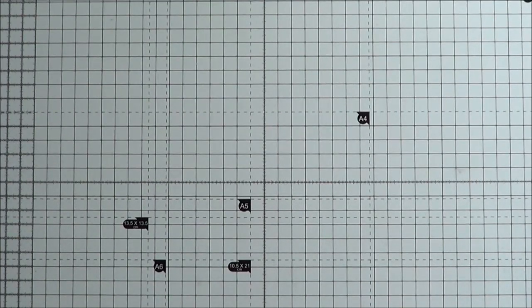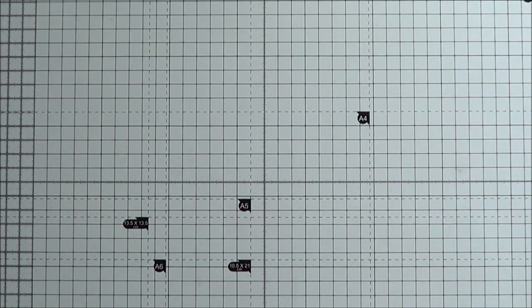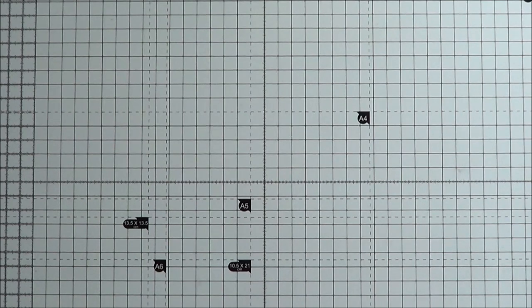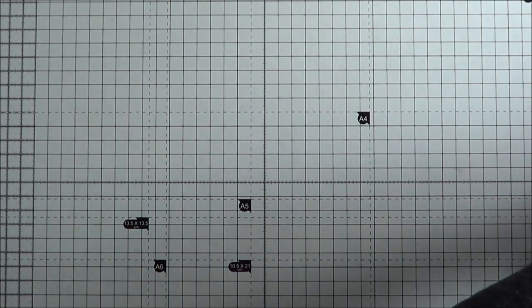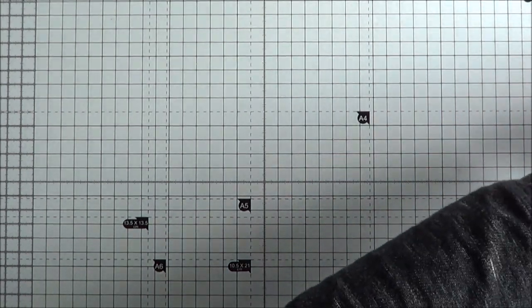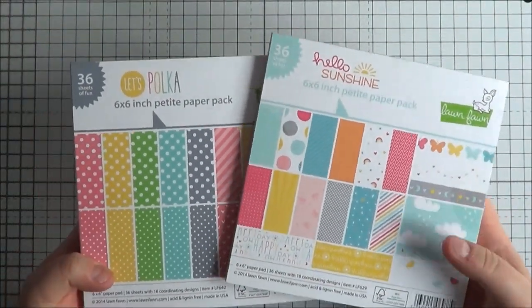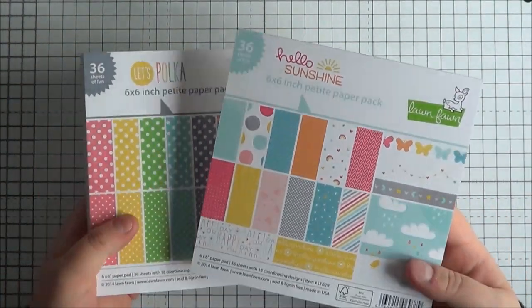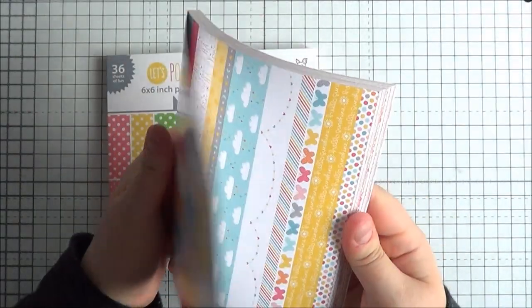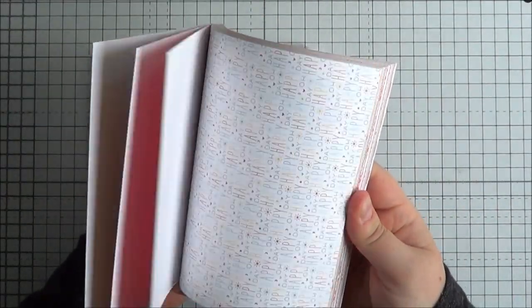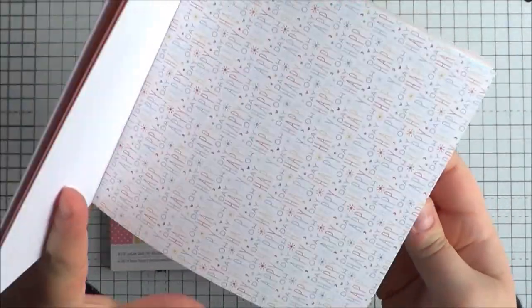So then on to the things that I actually bought in March. So first of all I made an order with Crafty Charlie and if you follow my Facebook page you would have seen these. I got two of the new Lawn Fawn paper pads. So this is the Hello Sunshine. It's just really pretty. I'm sure you've probably seen it all by now.